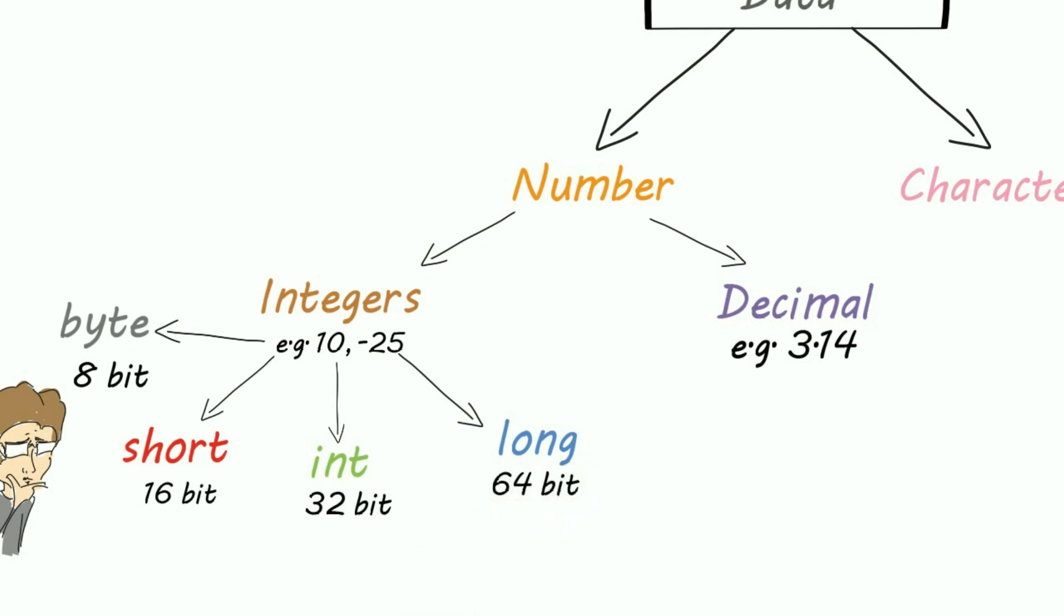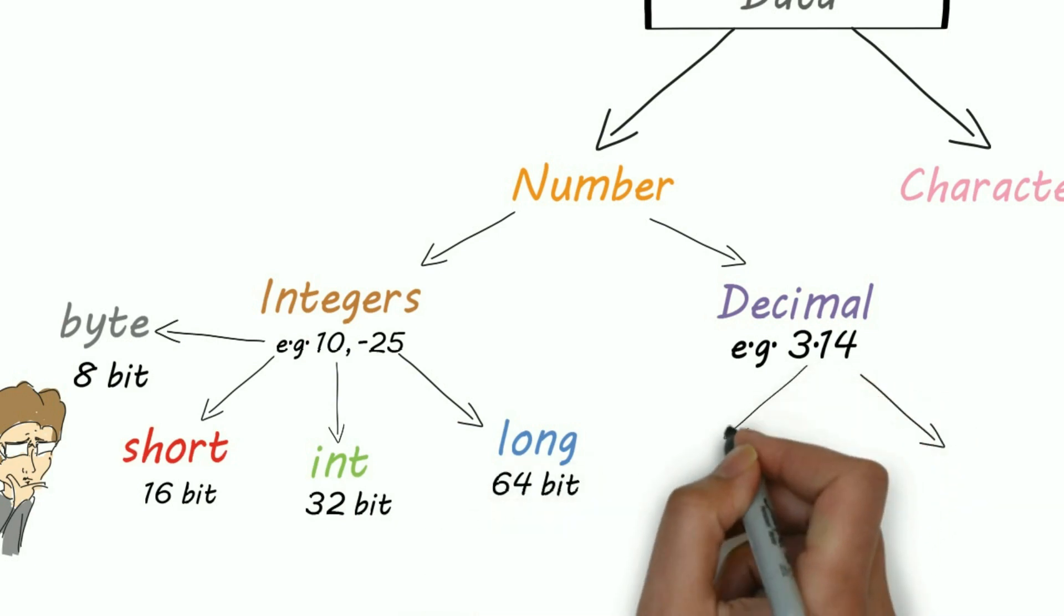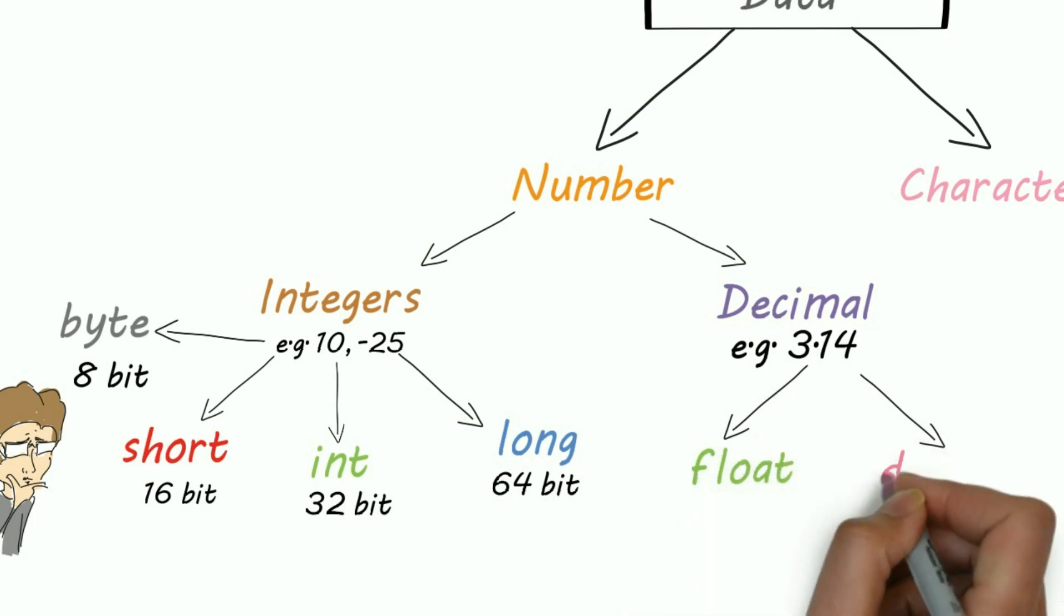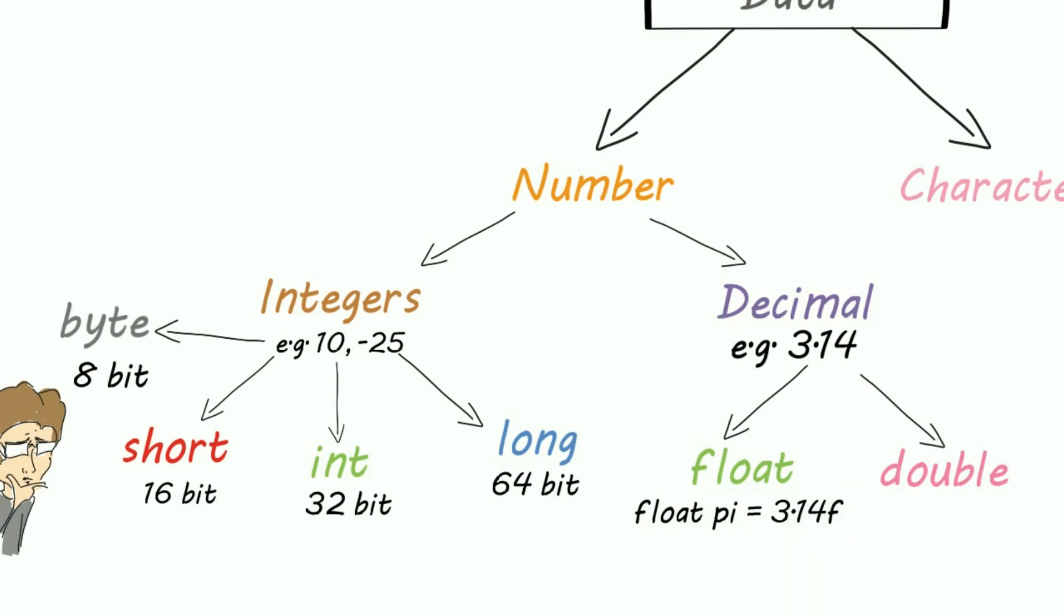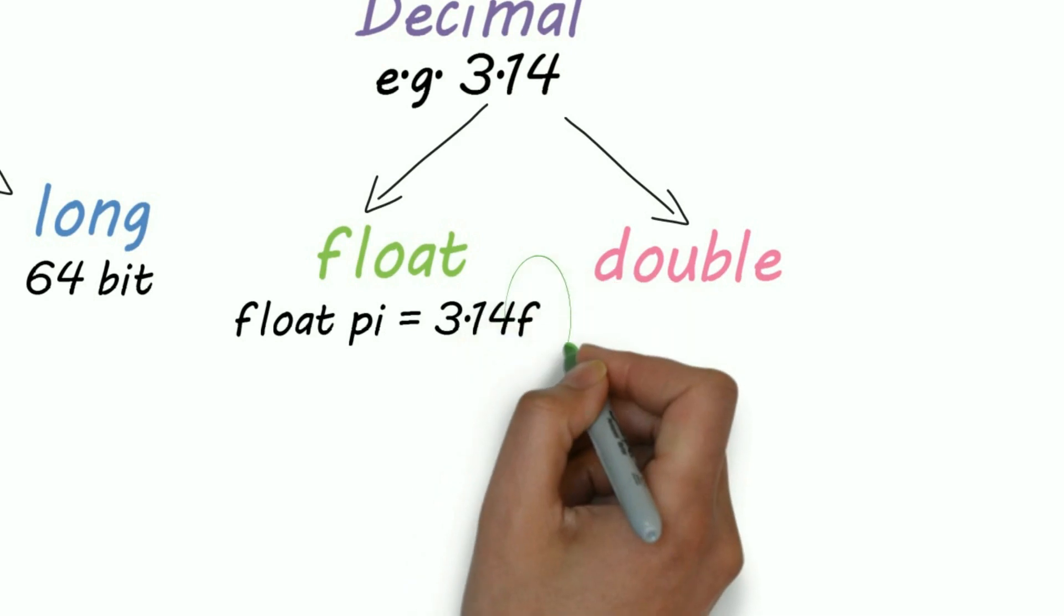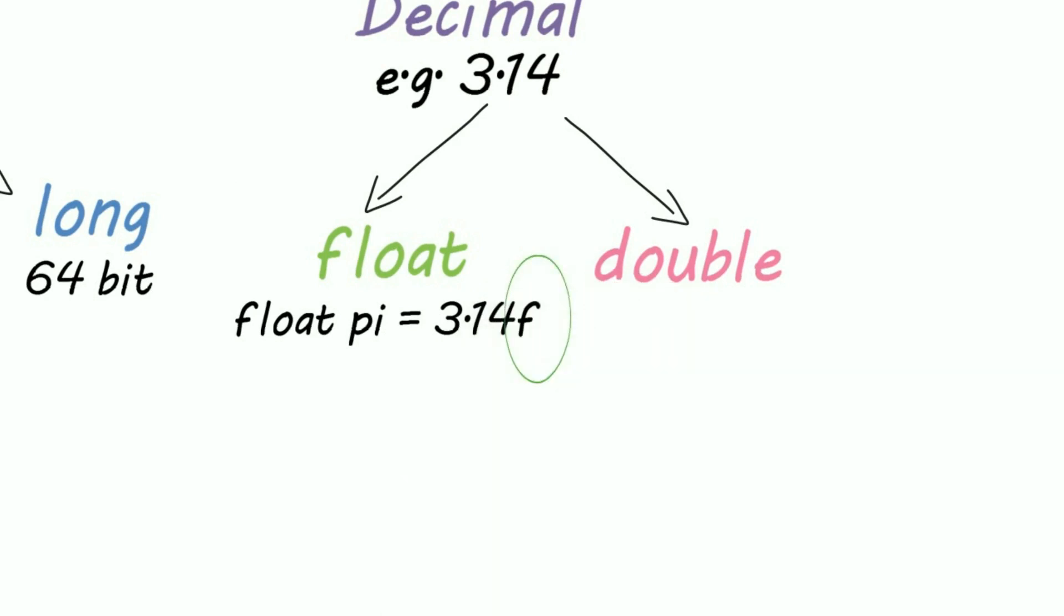The same situation is with decimals. We have two data types: float and double. If I want to store a small decimal value, for example, float pi is equal to 3.14, I'll use float. In float, we have to add lowercase or uppercase f in the end, for example, 3.14f.